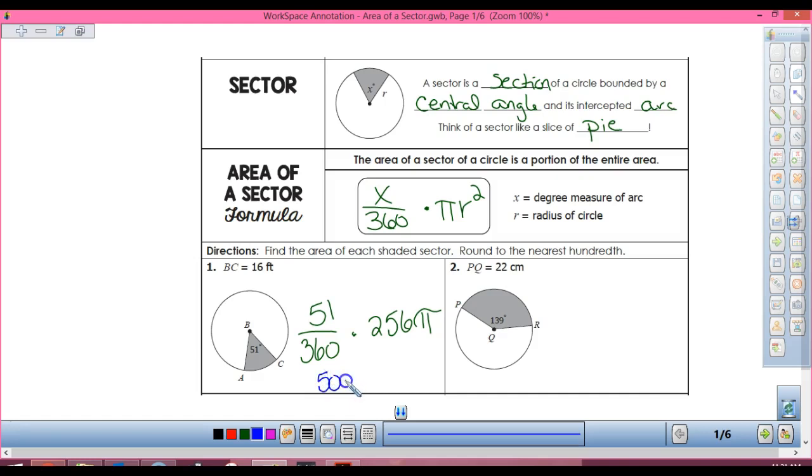36.27 pi, and this time it's feet squared, because we're talking areas. And so you're just hooking on your pi, just like we have been.